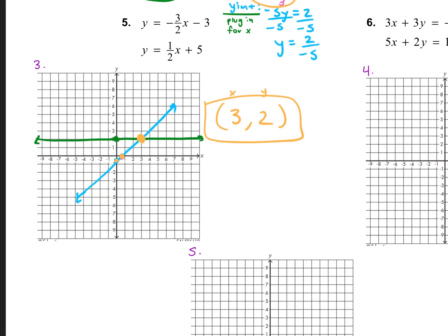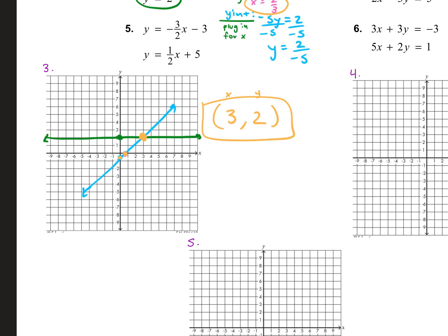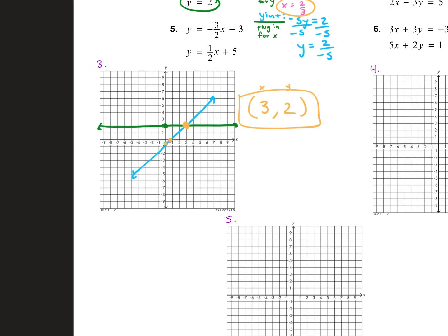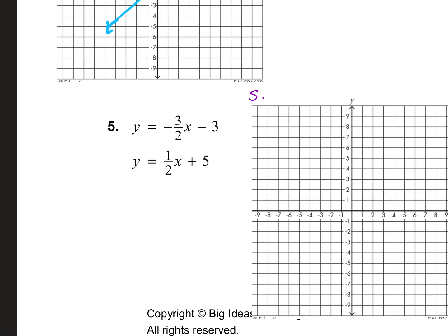Let's do problem five, which we have in slope-intercept form. Let's graph our first line first. What is our y-intercept — our b value? Negative three. So we're going to use our slope and our y-intercept. What's our slope? Negative three over two. So we put our y-intercept first — go down to negative three on the y-axis.